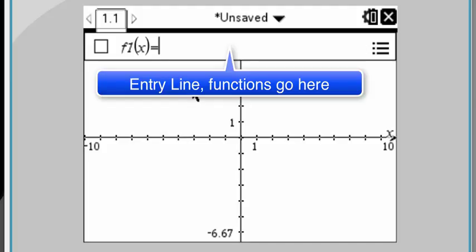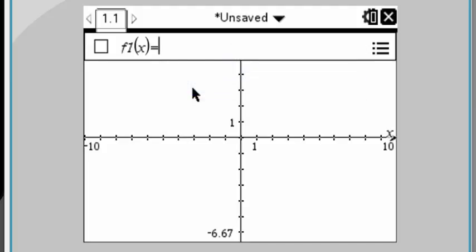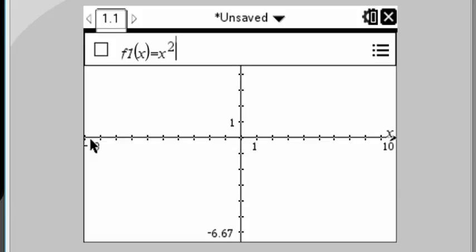And here we go. The top line of the screen is prompting you to enter a function. So here's where you can put it in. x squared plus 3x minus 12. And then press the enter key.